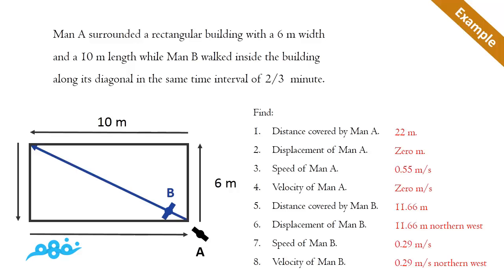straight line, not like Man A. So the speed and the velocity will have the same value: 0.29 meters per second. While this velocity also has a direction, as well as the displacement, which is in the northwest of his initial position.